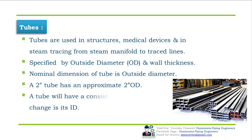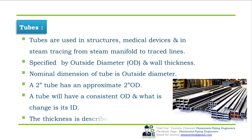A tube will have a consistent OD and what will change is its ID, because tubes are used in structural, medical device, and steam tracing applications which require a precise ID. The thickness of the tube is defined by a gauge number.